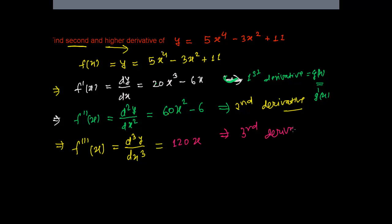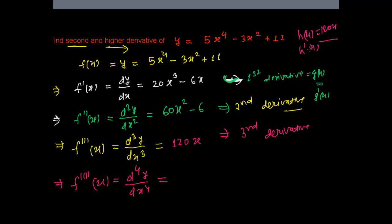Now let's find the fourth derivative, written as f with four primes, or d⁴y over dx⁴. The third derivative is 120x — you can think of this as a function h of x equals 120x. Taking its derivative h prime of x gives 120. So the fourth derivative is 120.